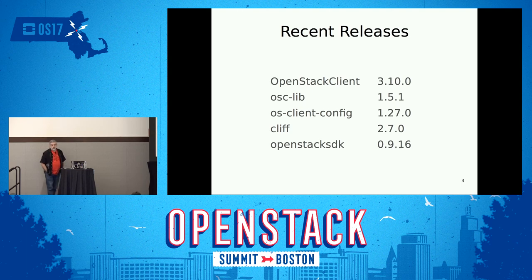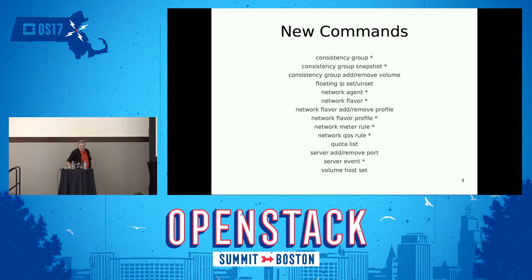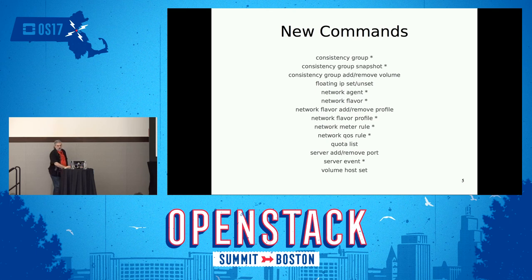The current version of OSC itself is 3.11 — we had a bug fix, and it had to be a minor release because we updated the requirements. The 3.10 release of OSC included quite a few new commands. There's the consistency group stuff for volumes, some changes to floating IPs, a whole lot of network things around networking flavors, around network agents, and some of the effects of taking out Nova network.